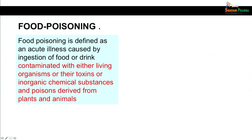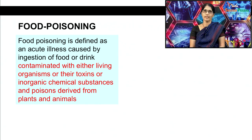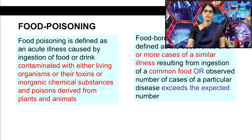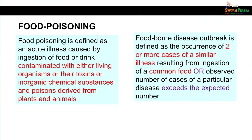Food poisoning is defined as an acute illness caused by ingestion of food or drink which is contaminated either with live microorganisms or their toxins, or by inorganic chemical substances or poisons derived from plants or animals. A foodborne disease outbreak is defined as the occurrence of two or more cases of a similar illness resulting from ingestion of a common food, or where the observed number of cases of a particular disease exceeds the expected number.